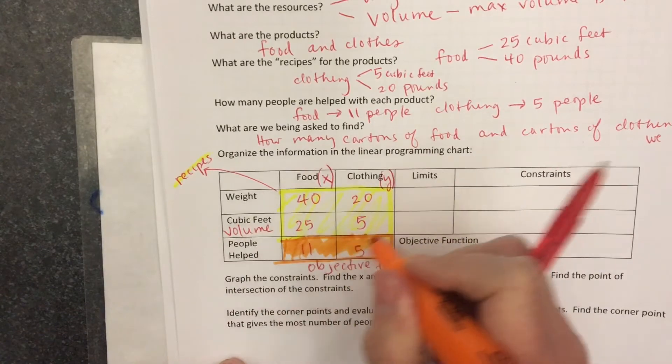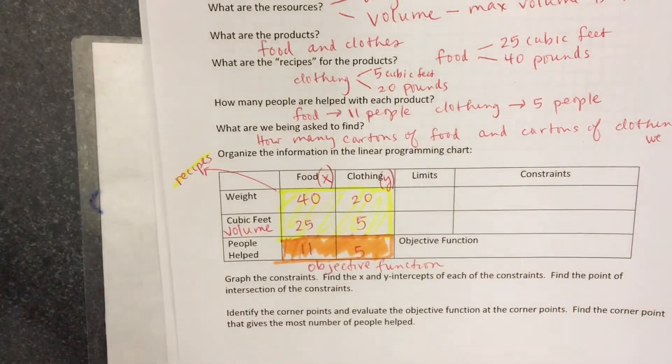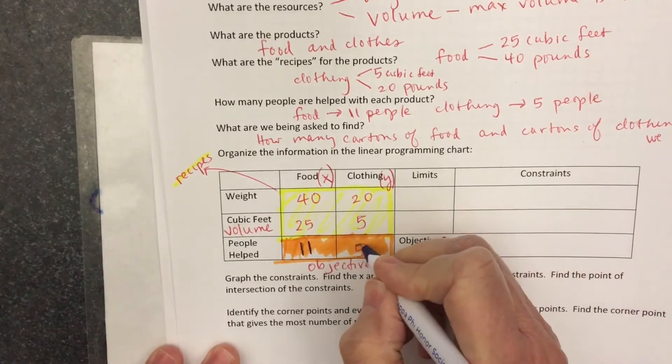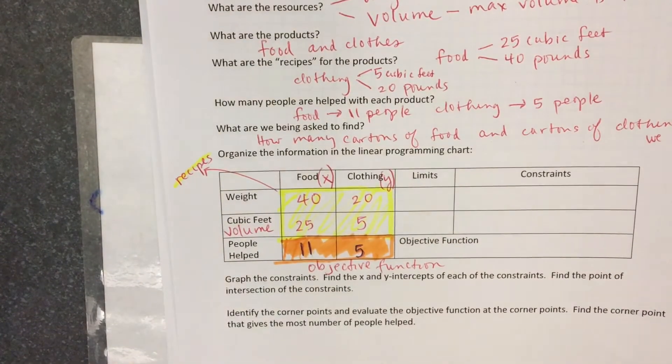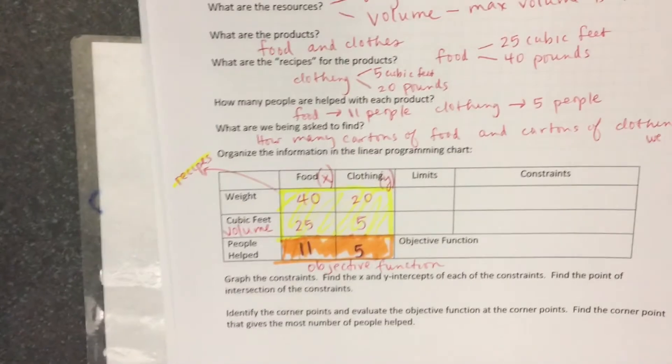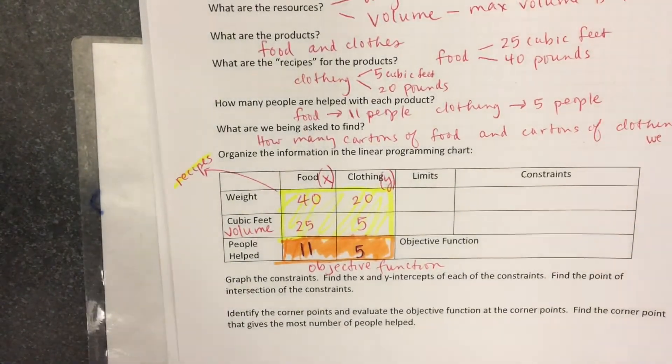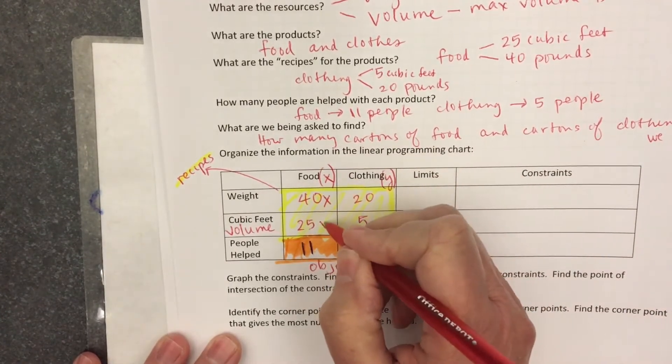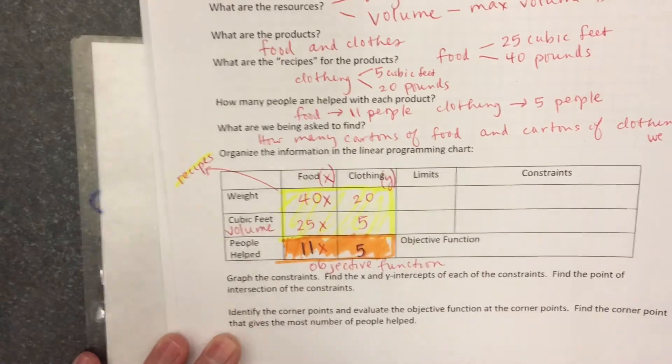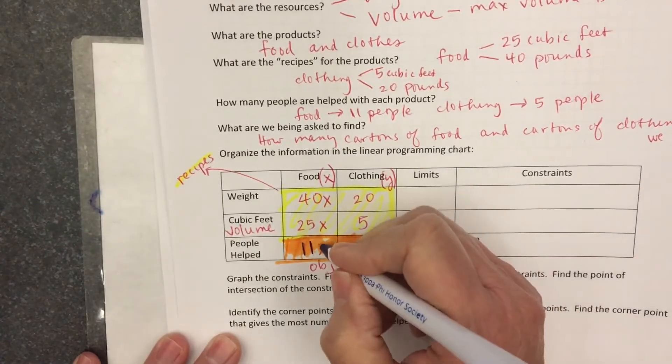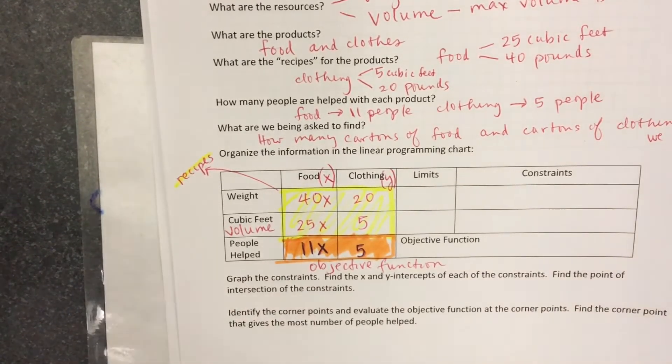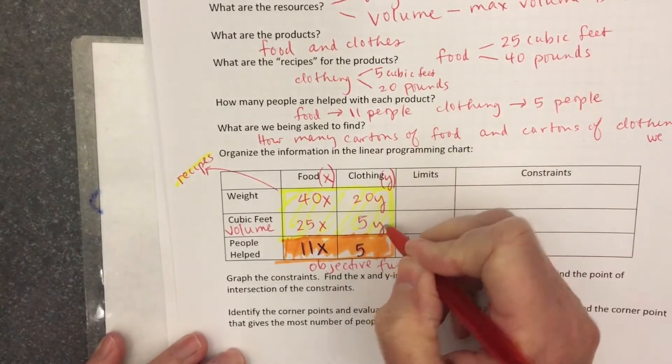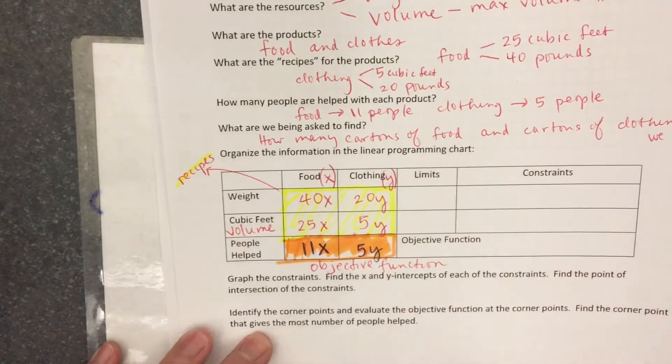I'll try to clean that up a little bit. With 11 people helped with food, 5 with the clothing, food being X cartons, you're gonna take that X and put it next to each of the numbers in the food column. And clothing being Y, we're gonna take Y and put it next to the numbers that are in the clothing column.